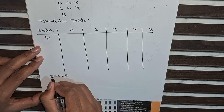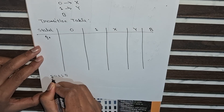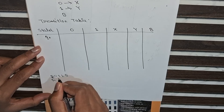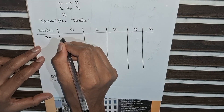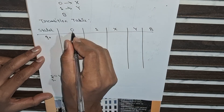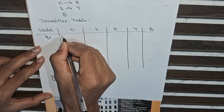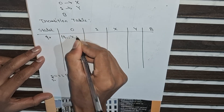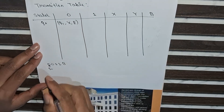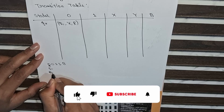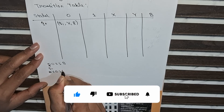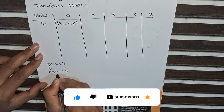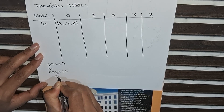The read-write head is on 0 with state q0, so I will define a function here: at state q0 on input symbol 0, go to q1, make this 0 to X, and move towards right. Now the tape reads X 0 1 1 B and the read-write head is on 0 with state q1.